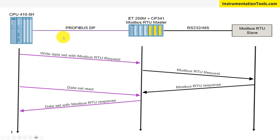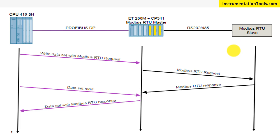The CPU 410 or AS station sends a Modbus RTU data request to the ET200M through Profibus DP. It then recognizes that it needs to pull data from the Modbus RTU slave connected via RS-232 or RS-485. If the device is alive and has data in its registers, it sends the Modbus RTU response. The CPU 410 sends a data entry request, and the Modbus RTU response is collected through CPU 410. This communication is slow, which is why it is not used frequently in industries.